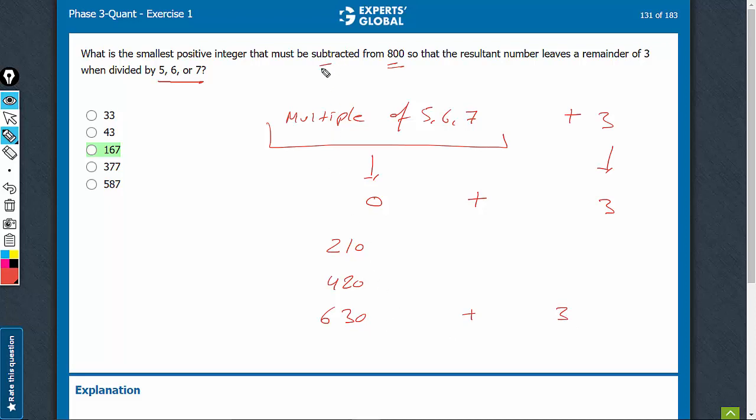The question is saying subtracted, so we have to take examples which are below 800. 630 plus 3 would be 633.